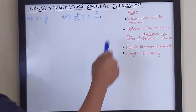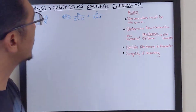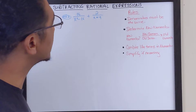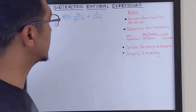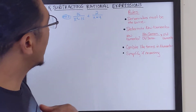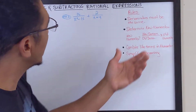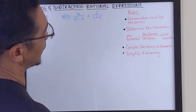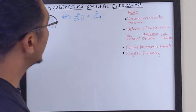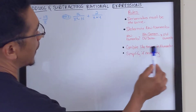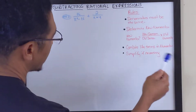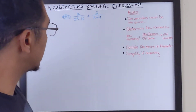Before we get started, let's talk about these rules. Rule number one: when you're adding or subtracting rational expressions, your denominators must be the same before you can add all the numerators together. Once you've found the common denominator, you have to determine the new numerator. Then you've got to combine all the like terms in the numerator, and after that, simplify the expression if necessary.